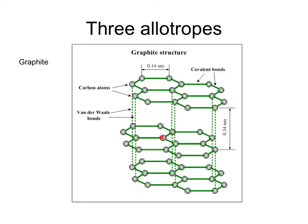In graphite, each carbon atom is surrounded by only three other carbon atoms and it forms this kind of chicken wire structure — these hexagonal tessellations — but each layer is separated from each other layer only by very weak attractions, which are easily broken. Because it's got these covalent bonds between the atoms, it's still got a high melting point and high boiling point, but it's not as hard as diamond.